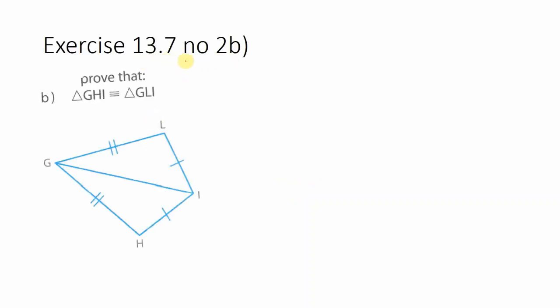So for number 2b of exercise 13.7, we have to prove formally that triangle GHI is equal to triangle GLI. And now, as we indicated previously, very important is the order. So now we have a general strategy to prove congruency.